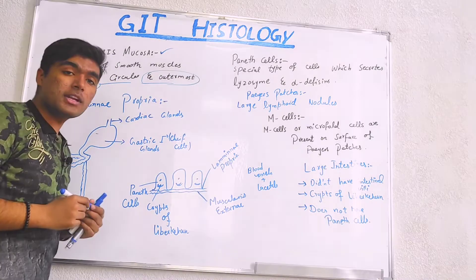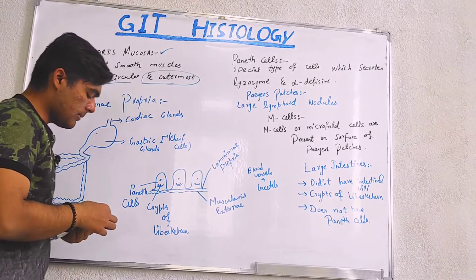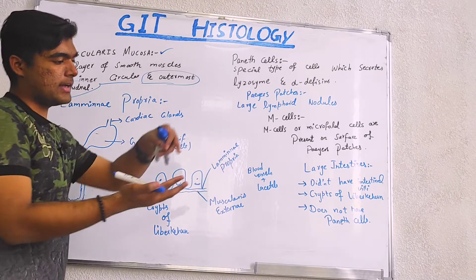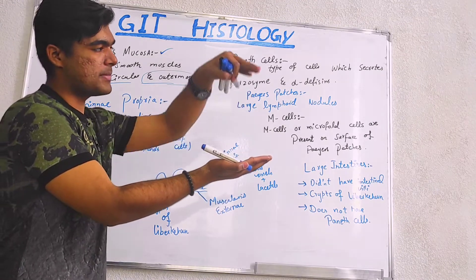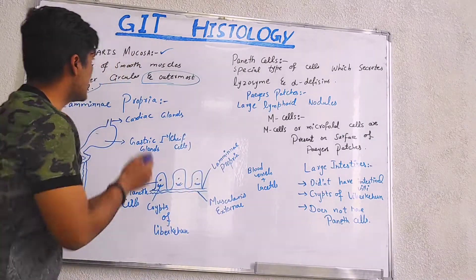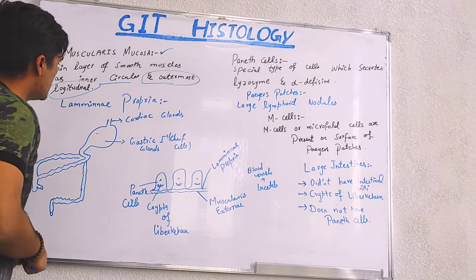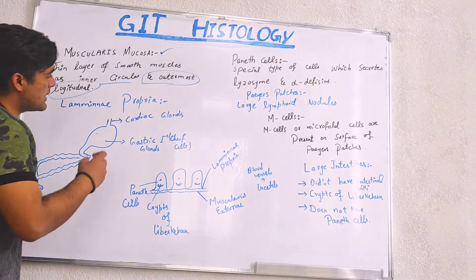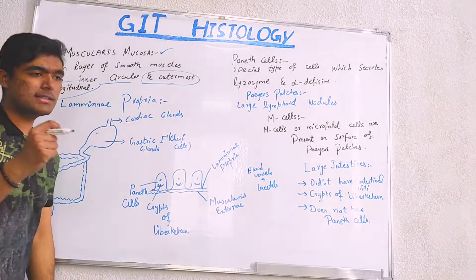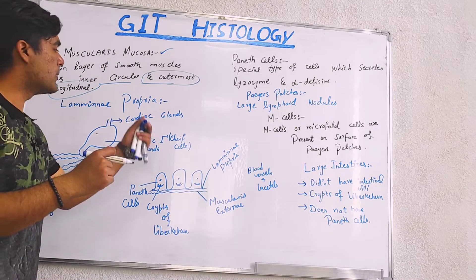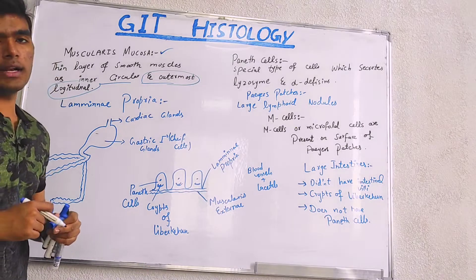Our main point is lamina propria. Lamina propria is basically next to that of epithelium. Epithelium is outermost layer, then lamina propria present, then muscularis mucosa occurs. So lamina propria basically contains some glands, some cells from esophagus to small and large intestines.